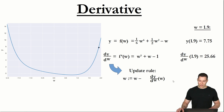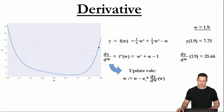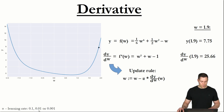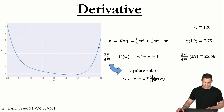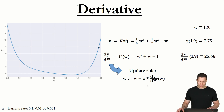We can't just take the derivative as it is — we have to scale it down by multiplying it by a factor, which we denote with alpha. This alpha is called the learning rate. Typical values for the learning rate are, for example, 0.1, 0.01, or 0.001. In our case, let's set the learning rate to 0.01. If we then update our w based on this rule, the new w would be 1.64, so we move from that point to this one.